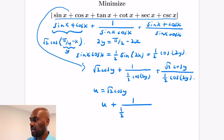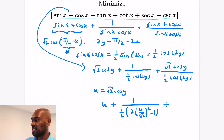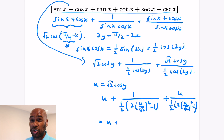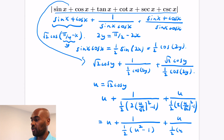With u = √2 cos y, the denominator involves (1/2)(2(u/√2)² − 1) = (1/2)(u² − 1). After clearing denominators, the expression becomes u + 1 / ((1/2)(u² − 1)) + u / ((1/2)(u² − 1)). This simplifies to u + 2(1 + u) / (u² − 1). Since cos y ranges over [−1, 1], u ranges over [−√2, √2].